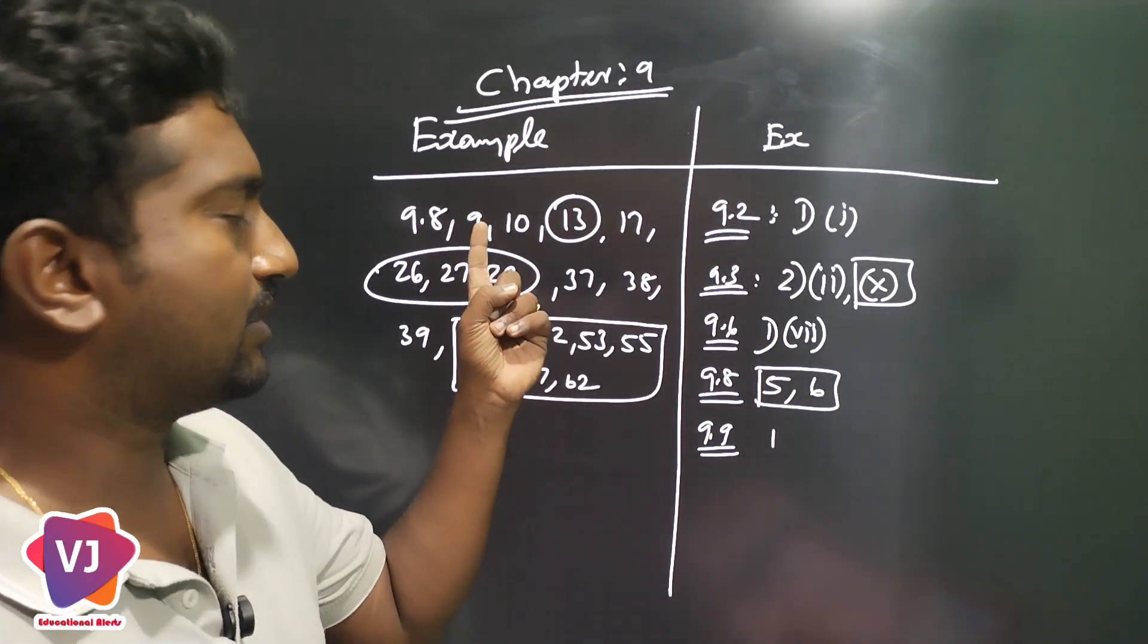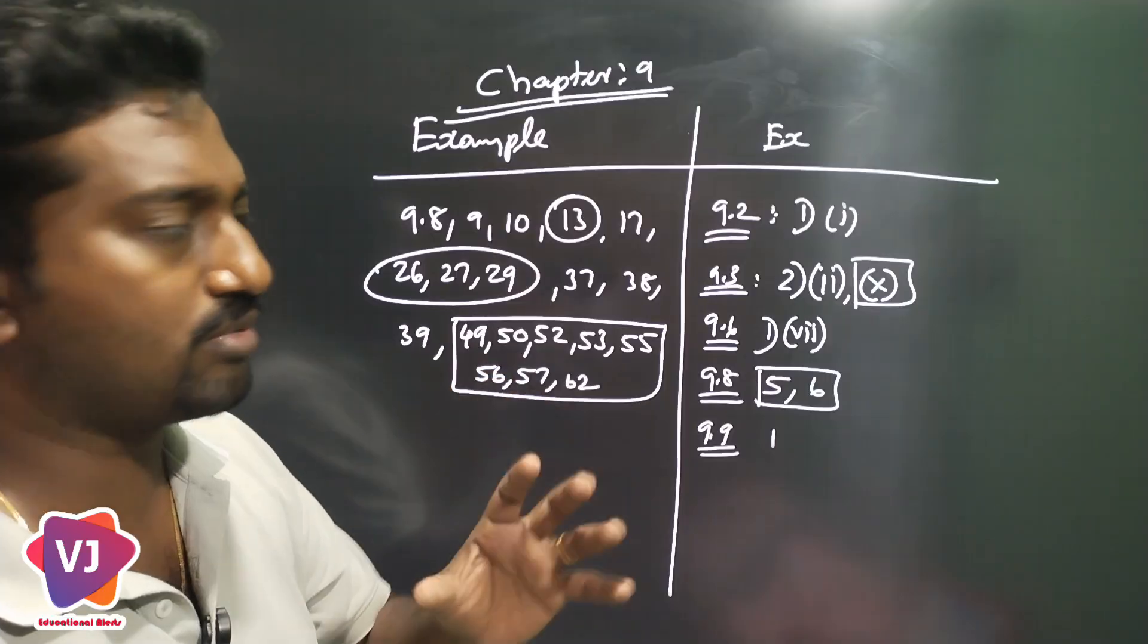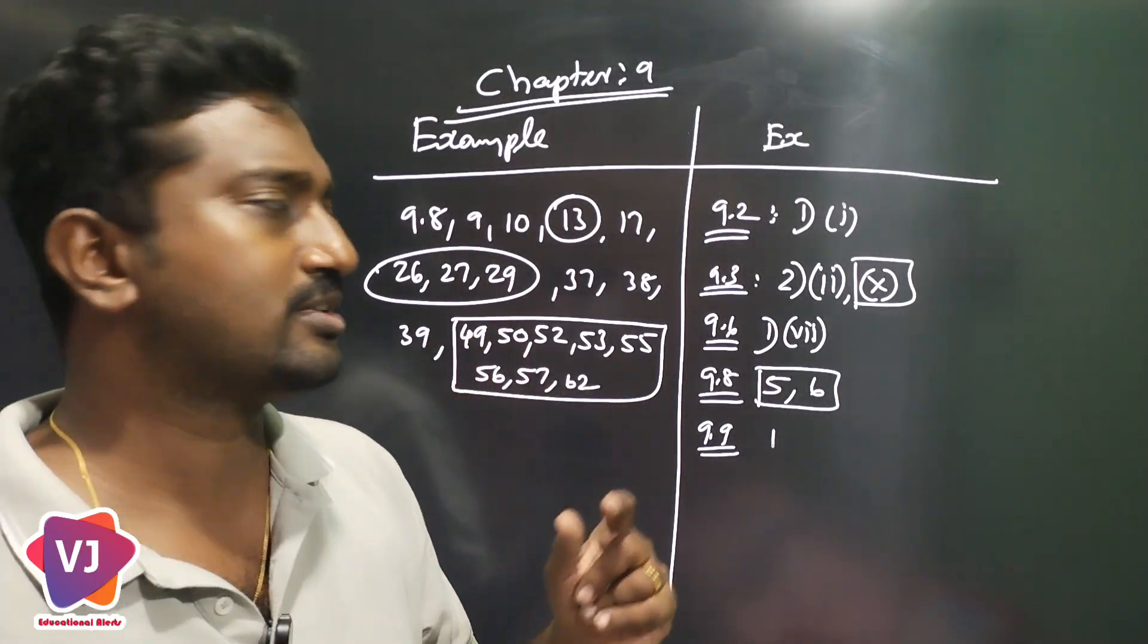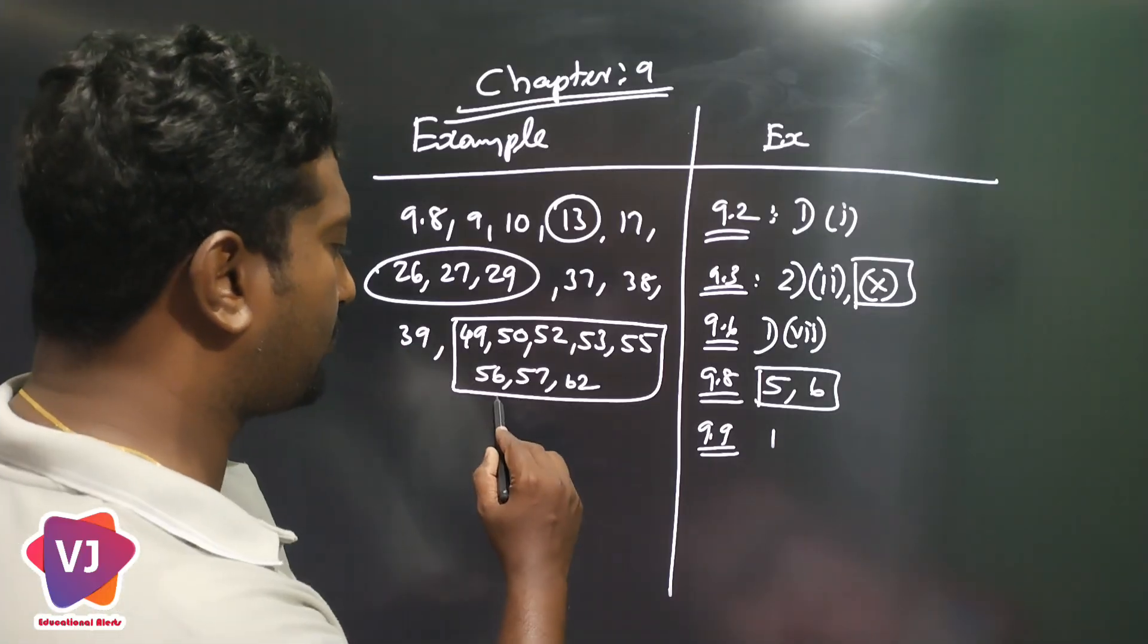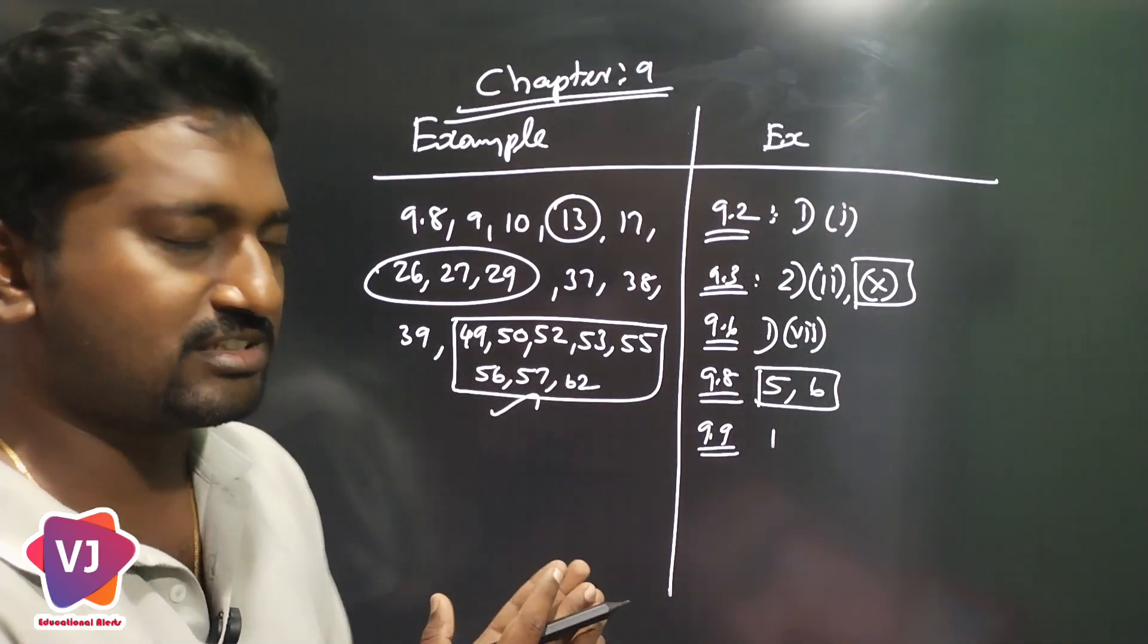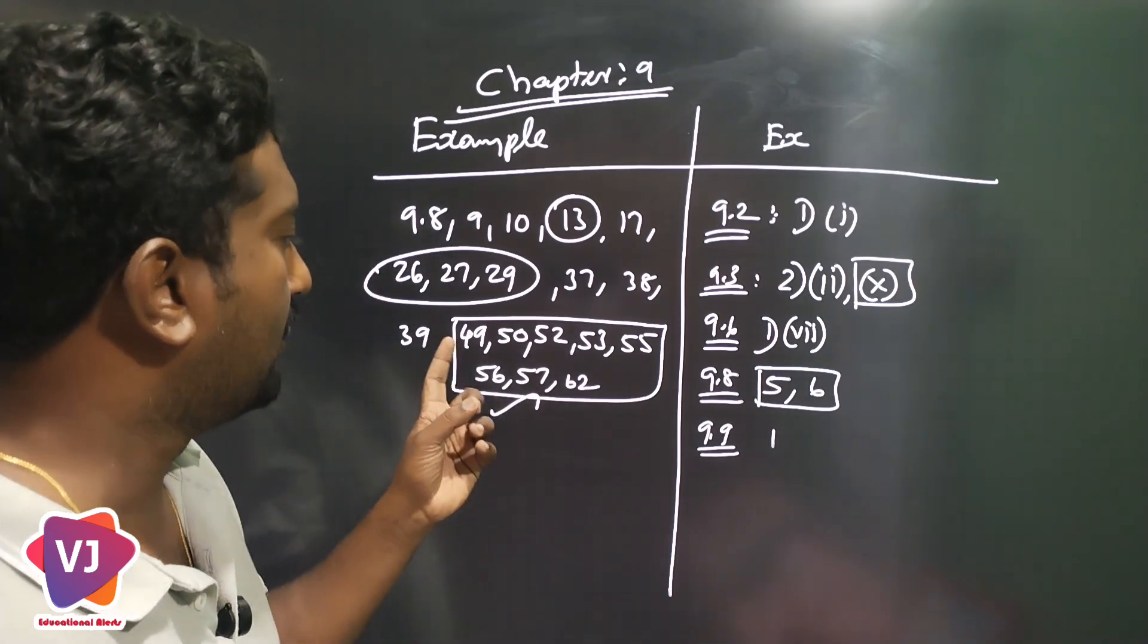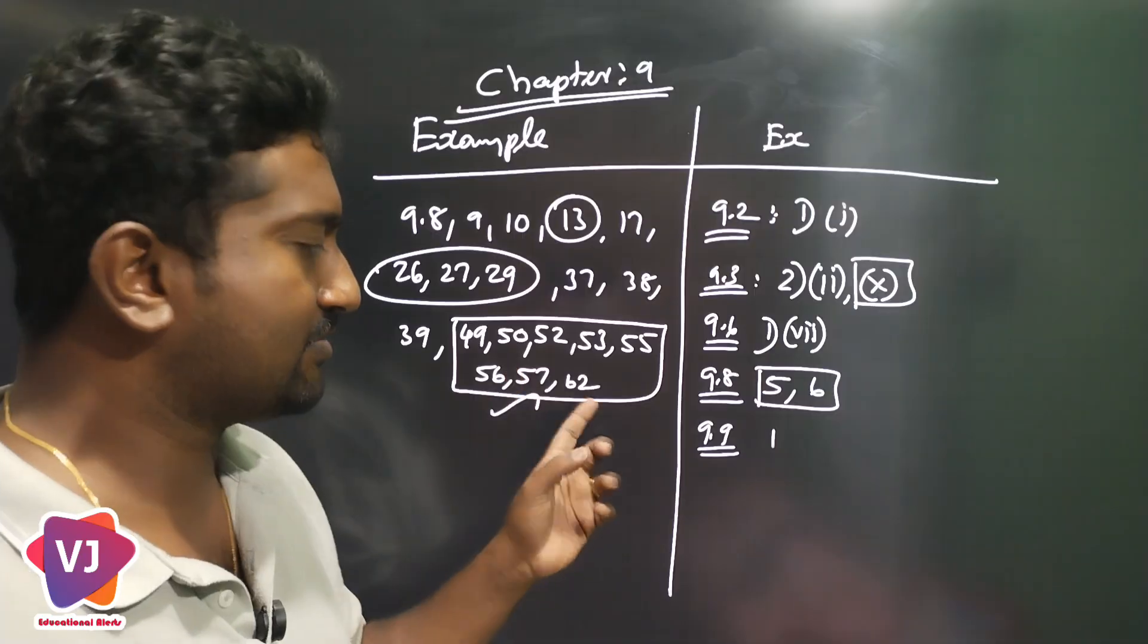Example 9.8 is 9, 10, 13, 17 is the most important part. 13 is the most important. It's 26, 27, 29. The most important is 37, 38, 39. So the exam is the most important part. 49, 50, 52, 53, 55, 56, 57, 62.